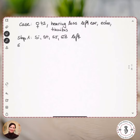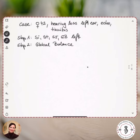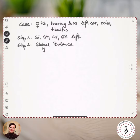In my step two, I decided to do a global balance because her sudden hearing loss was caused by the cold and the stress. Her general appearance was that she was very tense and very firm. Also when I checked her pulse, the pulse was very tense. So for this reason, I decided to use the global balance pattern Jiu Yin-Xiao Yang.